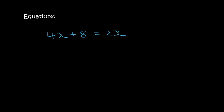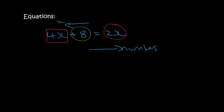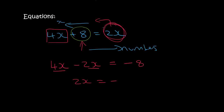With this one, you want all the x's on one side and all the numbers on the other. I'm going to put the x's on the left and the numbers on the right. This x is already on the left, so it's correct. This 2x is not — it needs to move over and become negative. This 8 is currently positive, so when it moves to the right it becomes negative. Now 4x minus 2x is 2x. Dividing both sides by 2, x equals minus 4.